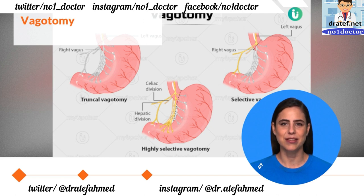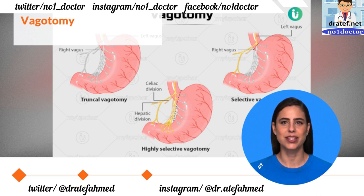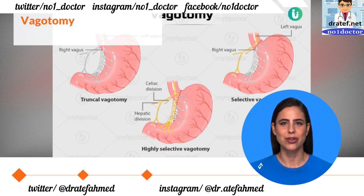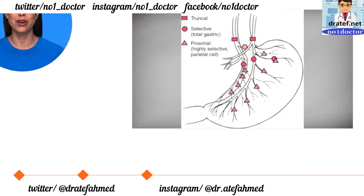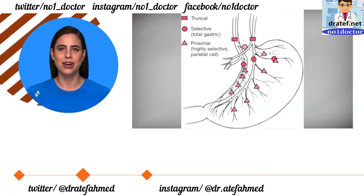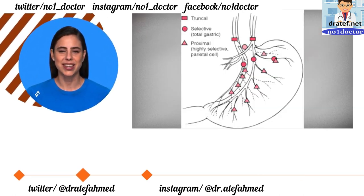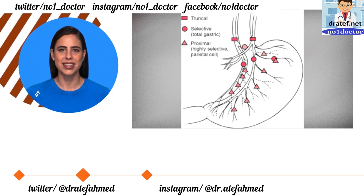Truncal vagotomy divides the vagal trunks at the level of the esophagus and decreases emptying of solids. Proximal vagotomy — also called highly selective vagotomy — divides individual fibers and preserves the crow's foot, resulting in normal emptying of solids. Addition of pyloroplasty to truncal vagotomy results in increased solid emptying.